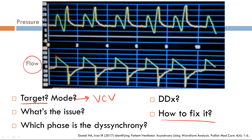So how do we fix it? You have two options. The first option is: what if we increase the flow to 80 liters per minute? You, the operator, have the ability to change the maximum flow rate. If you increase the flow to meet the demands of the patient and the pressure scalar improved and the dyssynchrony went away, you've solved your issue. The first way is to increase your flow rate.